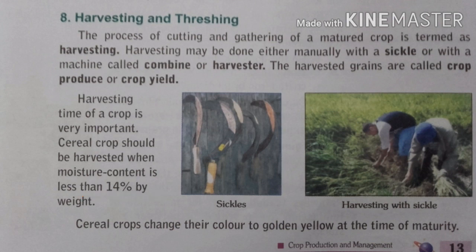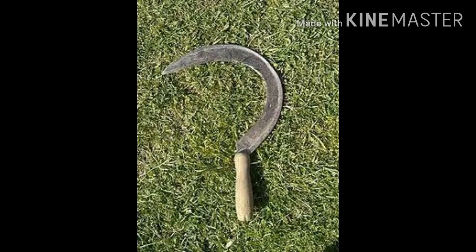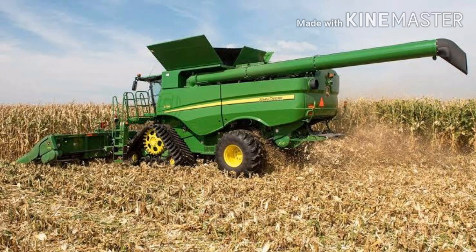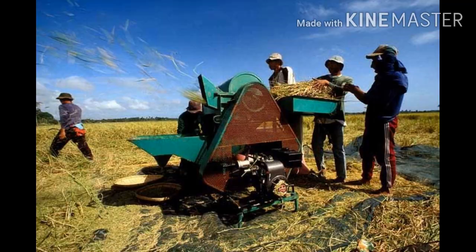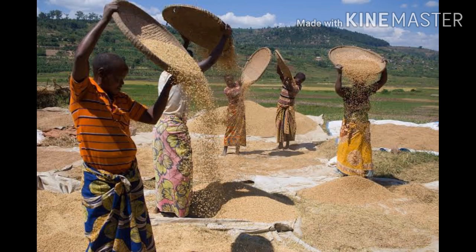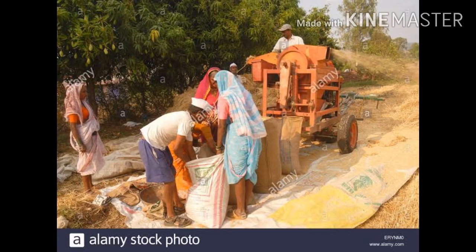Harvesting can be done manually using a sickle or with the help of a combine harvester. After harvesting, the grain parts are separated from the stalk with the help of a thresher — this process is called threshing. After that, grains are separated from the chaff and hay by winnowing, which can be done manually or by machines.